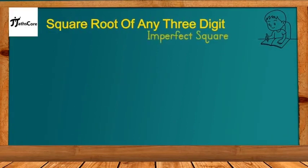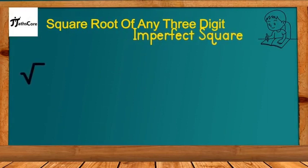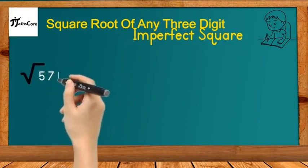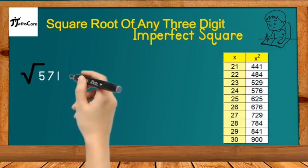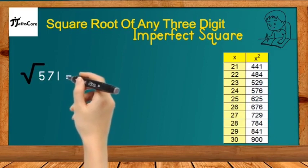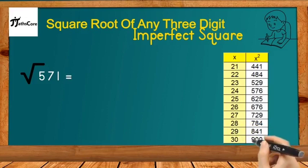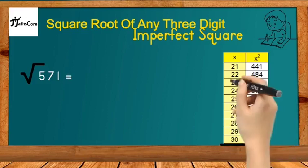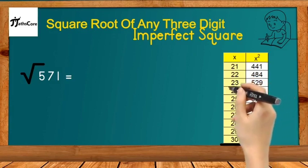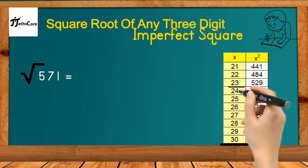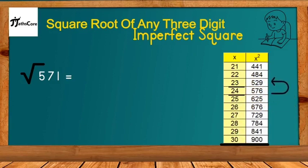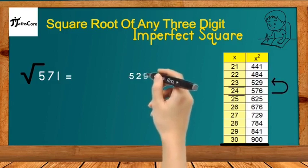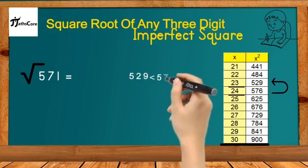Let's solve a third example: the square root of 571. To solve this, we need to know the squares of 21 to 30 very well — a reference table is provided. According to the Vedic math technique, we find between which two perfect squares 571 lies. From the table, 23² = 529 and 24² = 576, so 571 lies between 529 and 576.